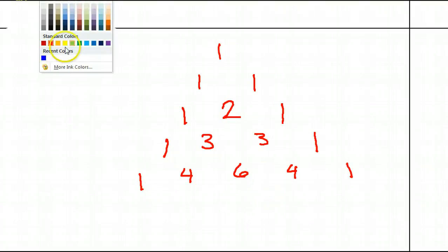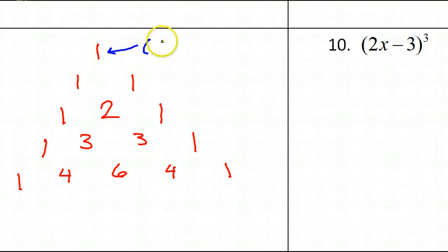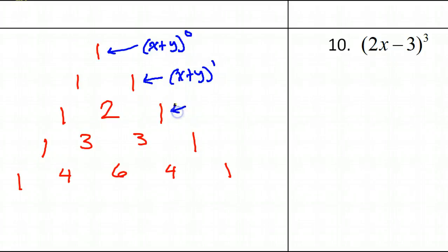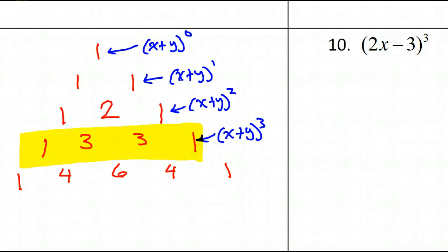We use Pascal's triangle to help us expand binomials — we can do a binomial raised to any power and these will be the coefficients. You just need to know which row to look at. This top number represents a binomial to the 0 power, then this row is a binomial to the 1st power, this row to the 2nd power, and this row would be a binomial to the 3rd power. I'm pausing there because our binomial is to the 3rd power, so these should be the coefficients once we expand: 1, 3, 3, 1.